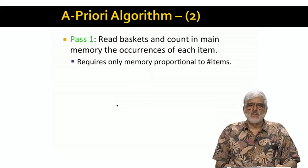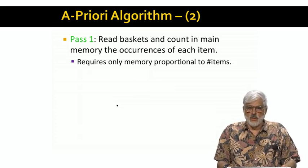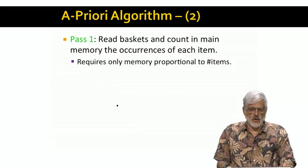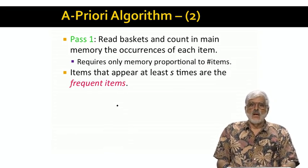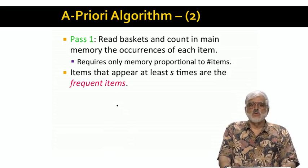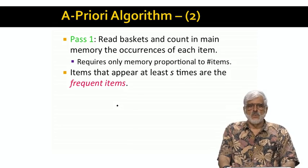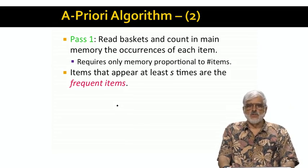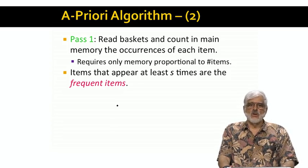On the first pass, we count the number of times each item occurs. We want to do this in main memory, and unless the number of items is beyond billions, we can set up an integer count for each item in main memory. After the first pass, we see which items appear at least s times — these are the frequent items. Incidentally, if all we want is to tell whether an item appears s or more times, it is sufficient to count up to s and not add beyond that. So if s is 10,000, we only need to keep 2 bytes per count, regardless of how many times items might appear in the data.